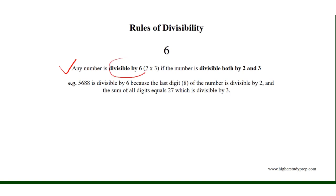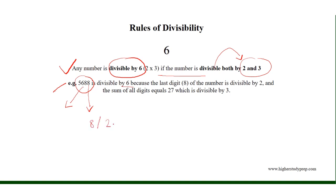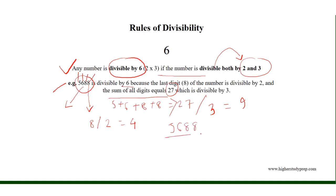Any number is divisible by 6 if the number is divisible both by 2 and 3. For example, the number 5688 is divisible by 6 because the last digit of the number is 8, which is divisible by 2, and the sum of all its digits is 5 plus 6 plus 8 plus 8, which equals 27, divisible by 3 because 27 divided by 3 equals 9. Therefore, 5688 divided by 6 results in 948.